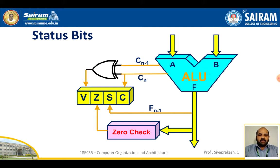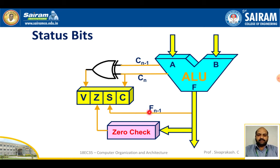The result F is checked at bit position F(n-1). The most significant bit is either 1 or 0 — based on that, the sign bit is verified. When the most significant bit F(n-1) is 1, the sign bit is set. Part of the ALU outcome is then sent to a zero checker.